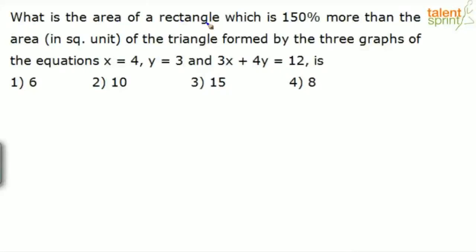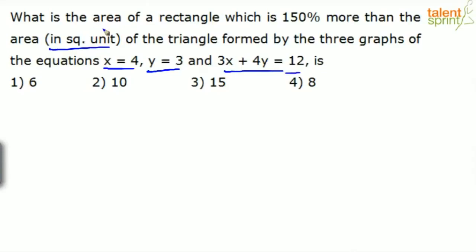What is the area of a rectangle which is 150% more than the area in square units of the triangle formed by the three graphs of the equations x equal to 4, y equal to 3, and 3x plus 4y equals to 12? So basically we'll have to find out the area of a rectangle which is 150% more than the area of the triangle.